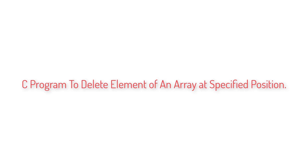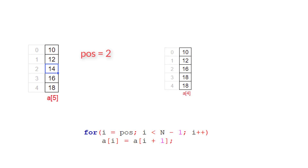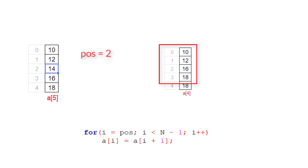Write a C program to delete an element of an array at a user-specified position. Let's assume we have an array variable 'a' of 5 elements. If the user selects position 2 to delete element 14, we need to move a[3] to a[2] and a[4] to a[3] using a for loop. The resultant array will be 10, 12, 16, 18, and 18, with 14 deleted. At the end, we display only elements from index 0 to 3.